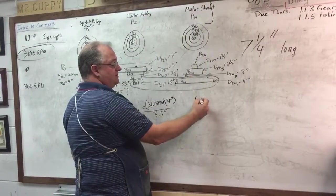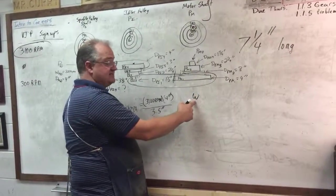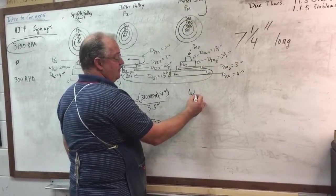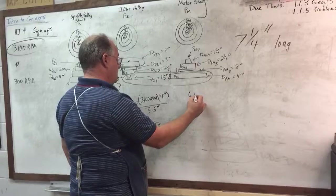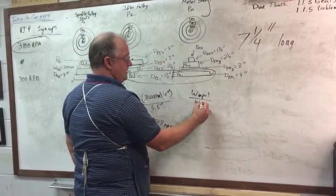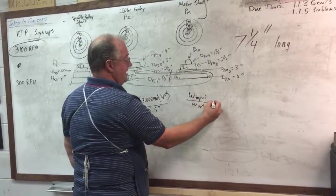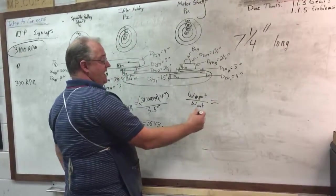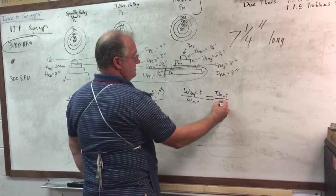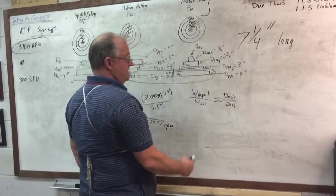So spindle, our angular velocity W equals our input over our output W out. And the diameter out equals the diameter in. That's our equation.